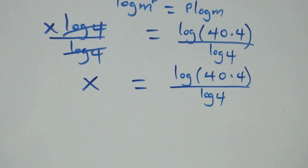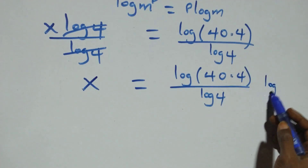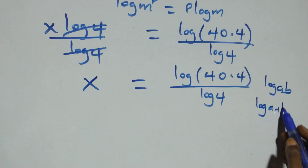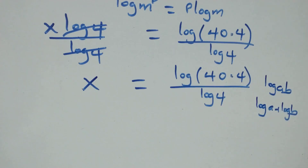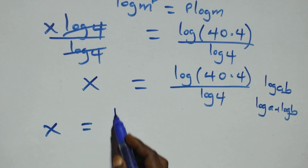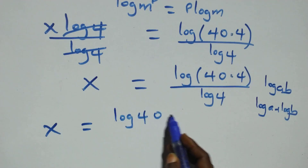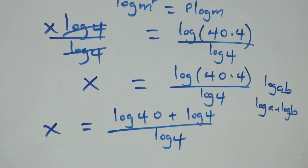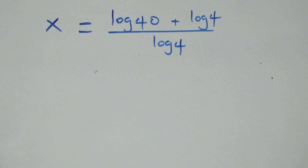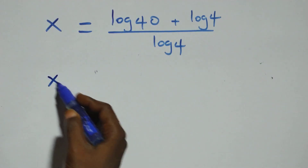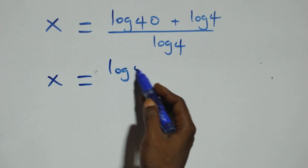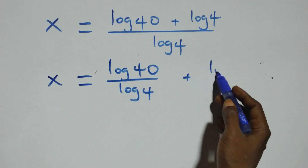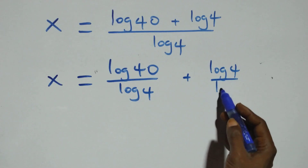Then here, we apply the log product rule, where we have log of a times b — this is the same thing as log a plus log b. What we have here becomes x equals to log 40 plus log 4, all over log 4. Then, in the next step, we separate this into two fractions, and we have x equals to log 40 over log 4 plus log 4 over log 4.